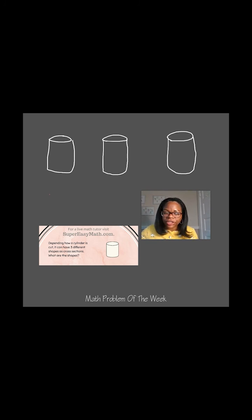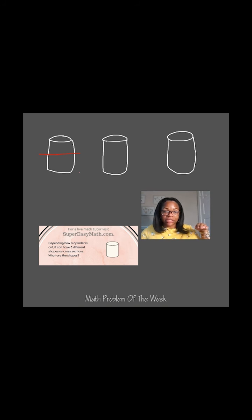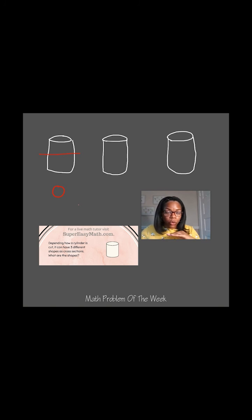To answer this question I've drawn three cylinders and I'm going to show you the cut line that each could make to get three different shapes on a cross section view. The first cut line could be a cut going completely horizontally across the center of the cylinder. When you look at that cross section from up above looking down, you would see a circle. So a horizontal cut on a cylinder would make a circle.